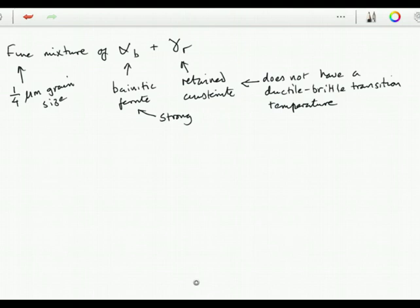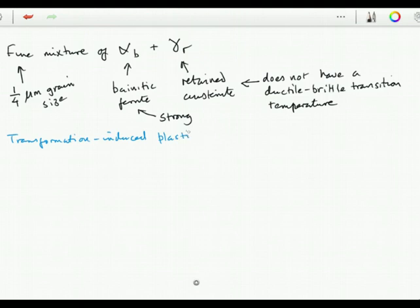Secondly, we may actually get toughening when the austenite is induced to transform under the influence of the stress field at a crack tip, because that leads to an absorption of energy and hence toughening. Transformation-induced plasticity is the terminology that we use to explain the absorption of energy when austenite is induced to transform under the influence of a stress. We will deal with TRIP steels in more detail at some stage. The gamma to alpha-prime transformation absorbs energy and therefore the toughness is improved.